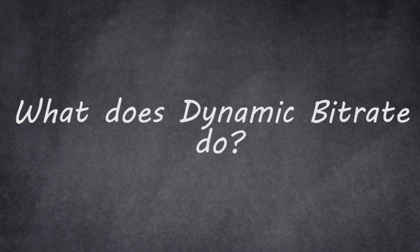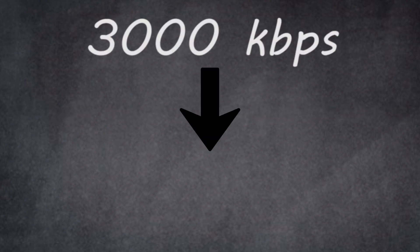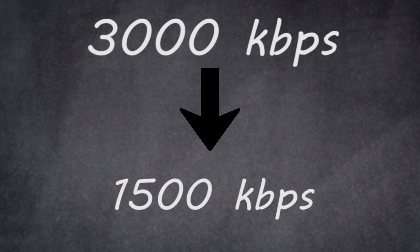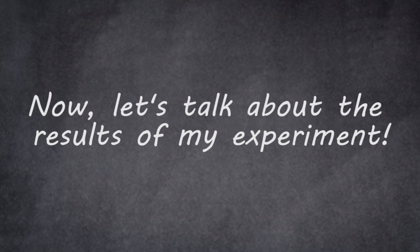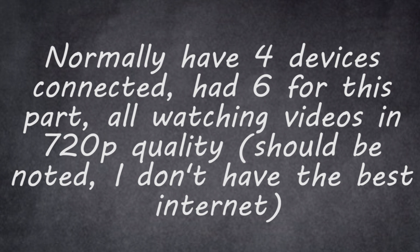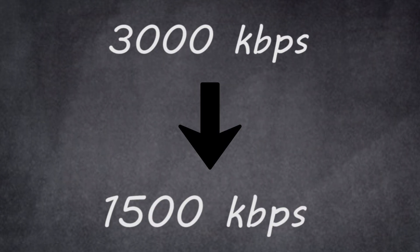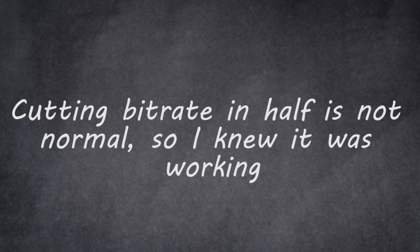Dynamic bit rate will decrease your bit rate so the internet can handle it during congested times. Going back to the ball example, it makes the ball smaller so it fits through the hole as a whole, not just bits and pieces. This may or may not lower the quality of the stream slightly for that period of time. During my experimentation, I congested my network moderately — a few more devices connected than normal — and my bit rate dropped from 3,000 to about 1,500, which it had never actually done before.